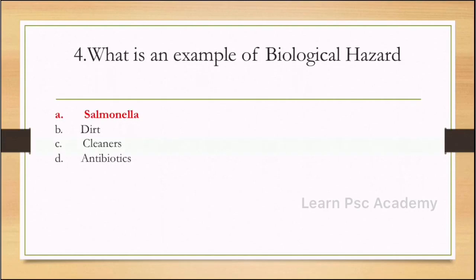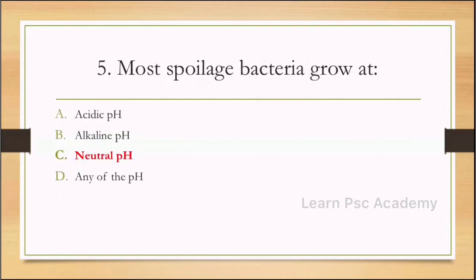Fifth question: most spoilage bacteria grow at which pH? Options: acidic pH, alkaline pH, neutral pH, any of the pH. Correct answer is neutral pH.